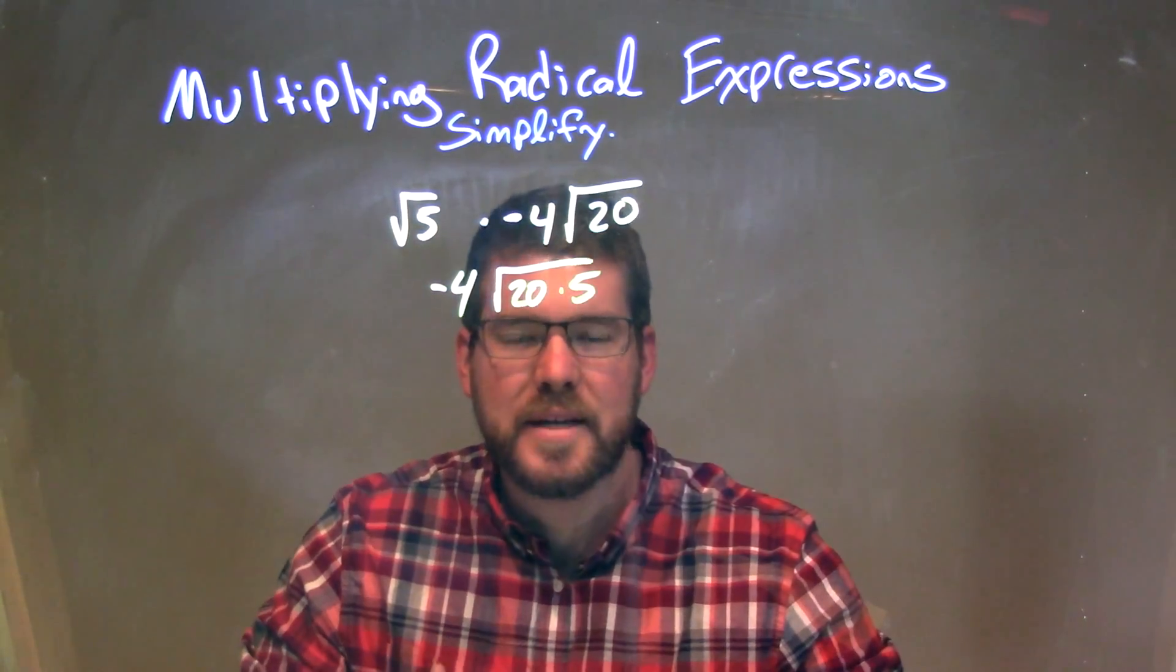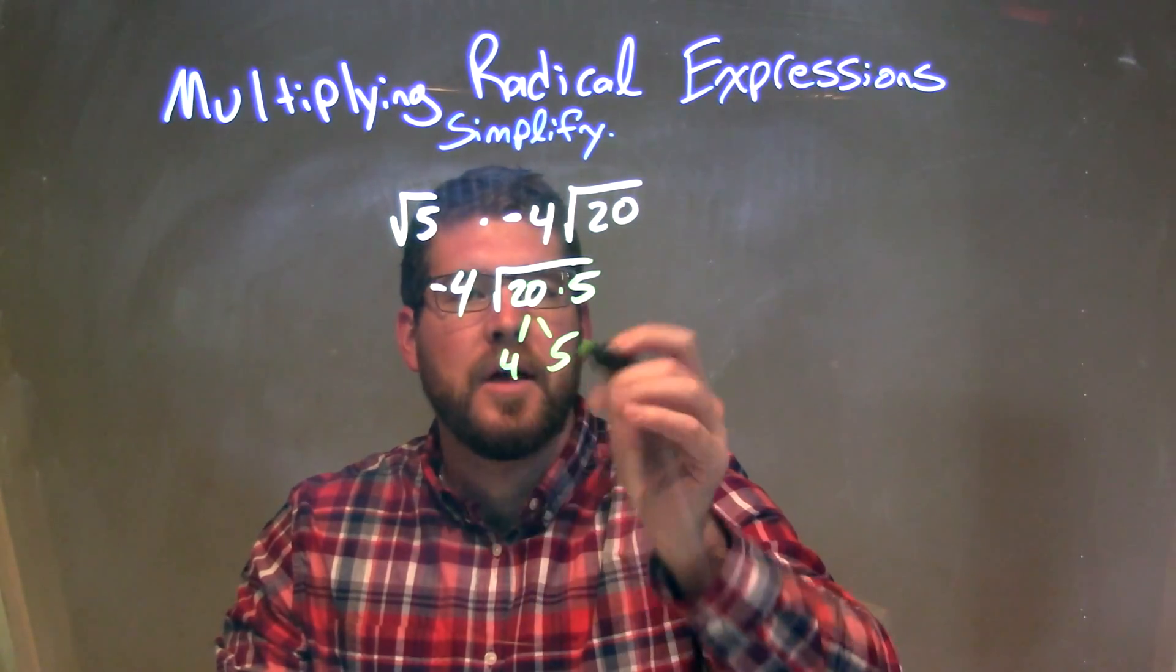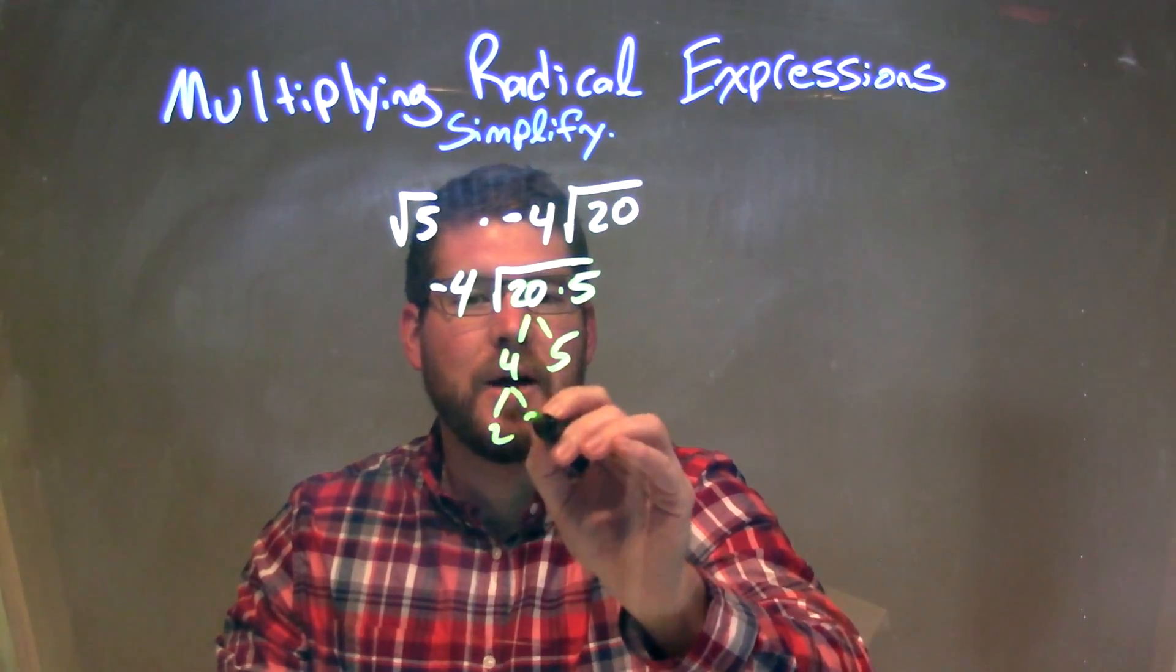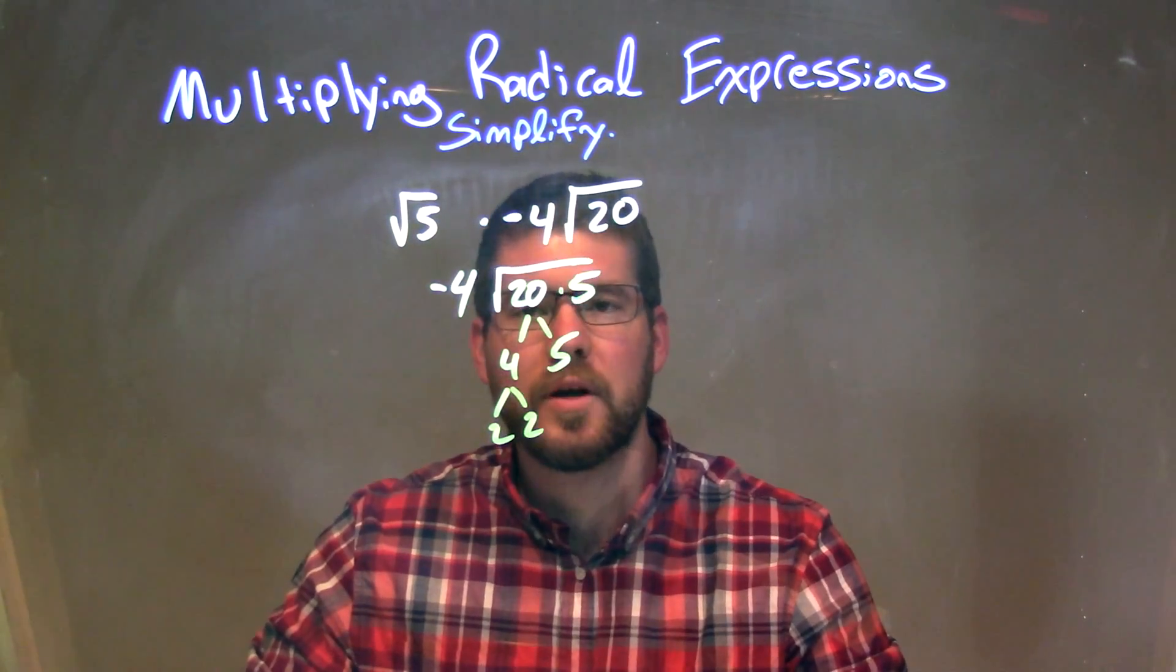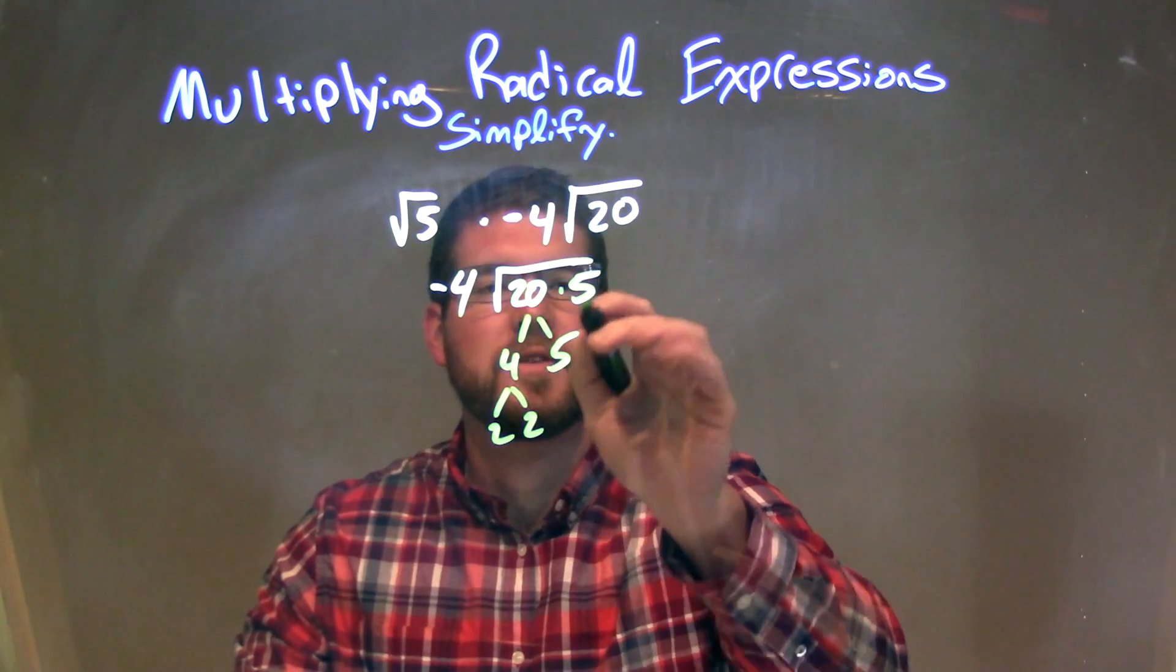So now let's break this down. Let's break down 20. Well, 20 is just 4 times 5, and 4 is 2 times 2. So really, 20 times 5 can break down to be 2 times 2 times 5 times 5.